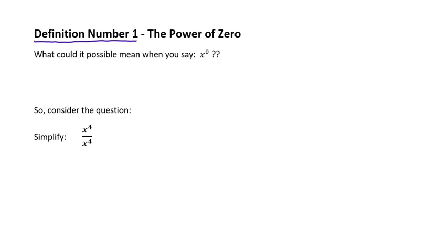There are actually three definitions in high school. We only do one in grade 8, then one in grade 9, and then one in grade 11. So this first definition that we're doing is something called the power of zero.